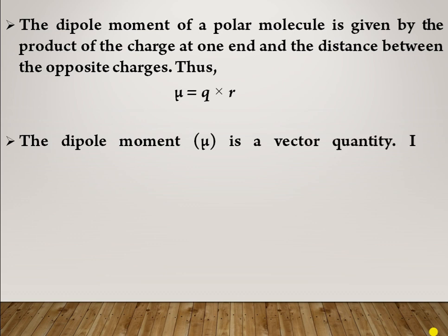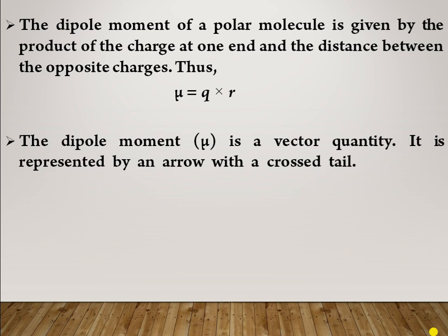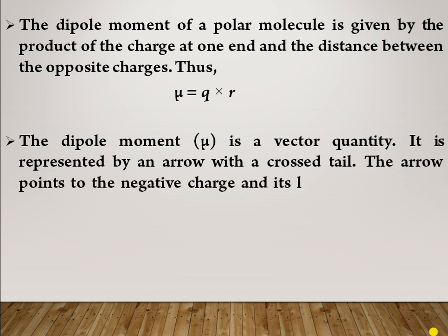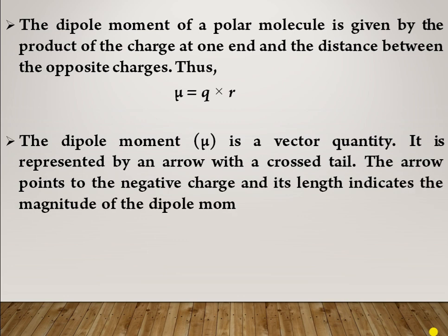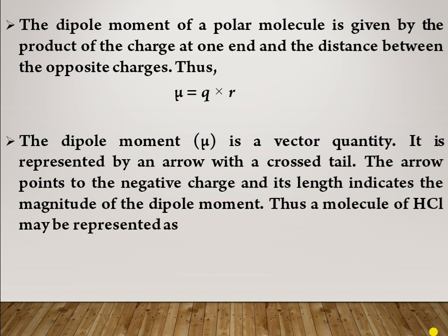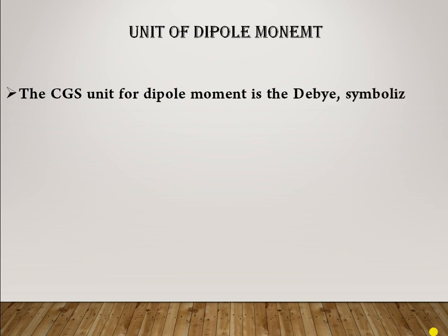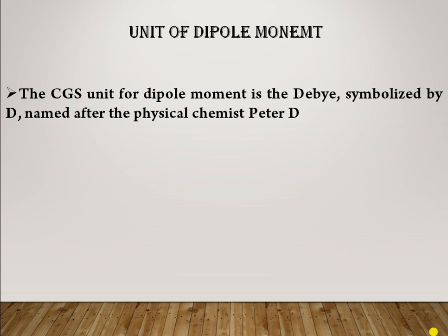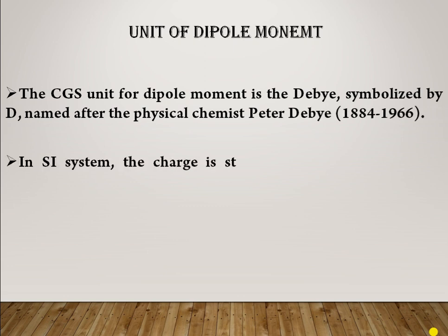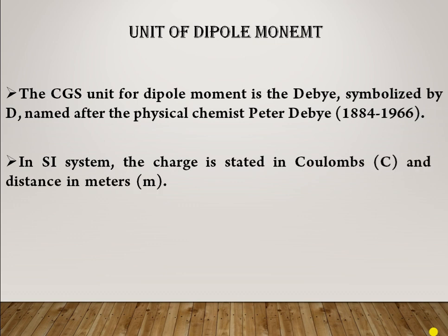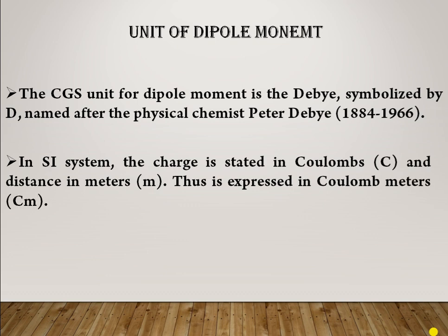The dipole moment μ is a vector quantity. It is represented by an arrow with a cross at the tail. The arrow points towards the negative charge and its length indicates the magnitude of the dipole moment. The CGS unit of dipole moment is the Debye, symbolized by capital D, named after physical chemist Peter Debye. In the SI system, charge is in coulombs and distance in meters, so dipole moment is expressed in coulomb-meters.